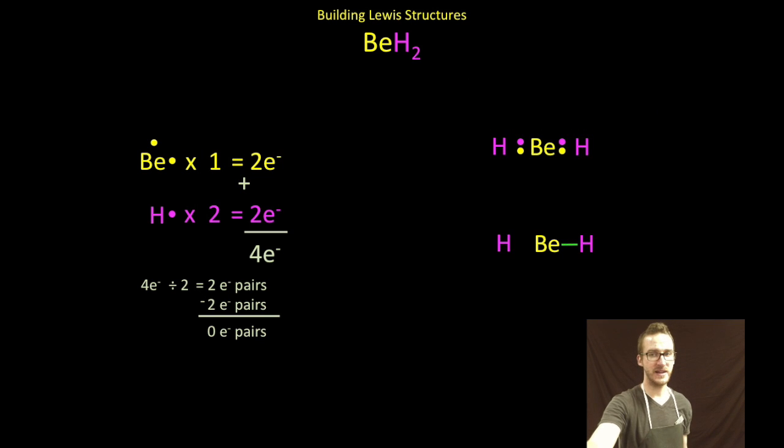And then lastly, recognize those bonded pairs of electrons can always be represented by a dash for each pair of electrons being shared.